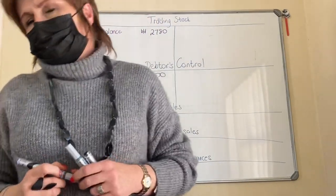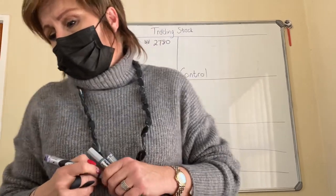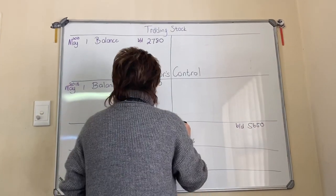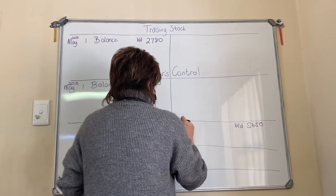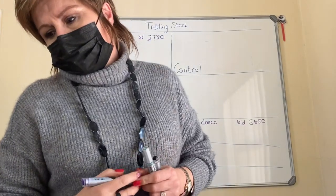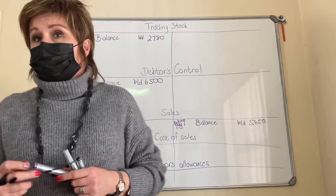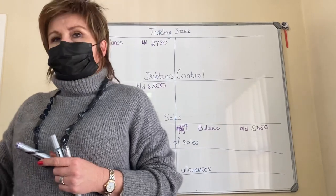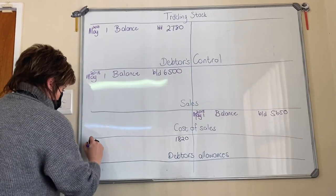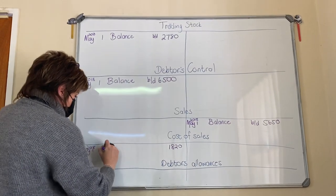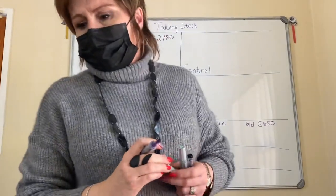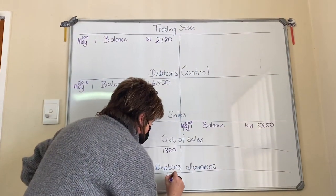Next opening balance: sales. Sales is an income — your rule says incomes have credit opening balances. Next one: cost of sales. Cost of sales is an expense — you've got to study it. Expenses have debit opening balances. Last one: debtors allowances — that's also an expense. Your rule says expenses have debit balances.